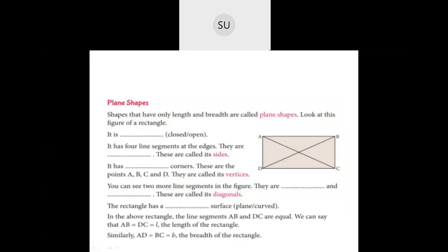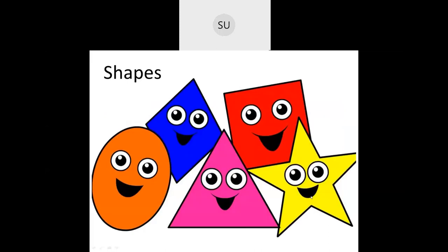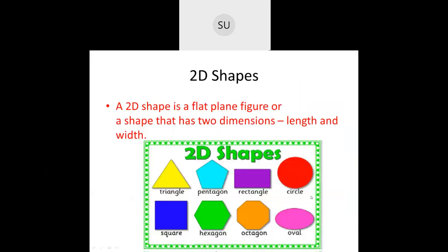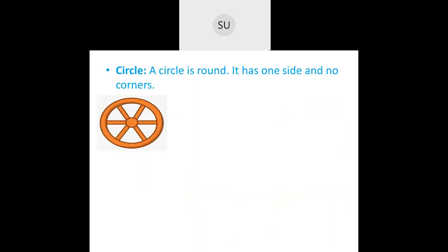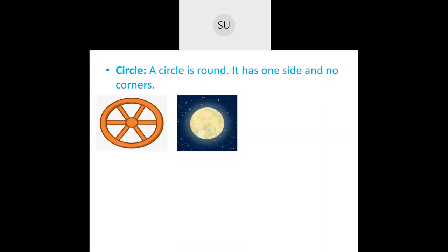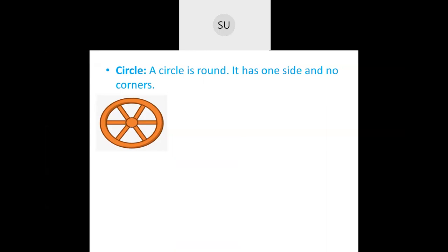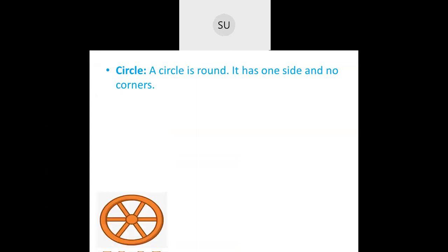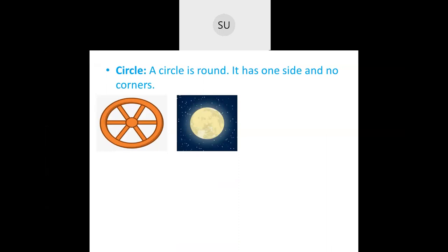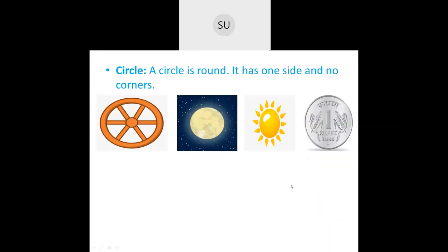Now let's look at a few other shapes. A circle has a curved surface and no vertices or corners. Examples of circles include a wheel, the sun, and a coin — all are circular in shape.